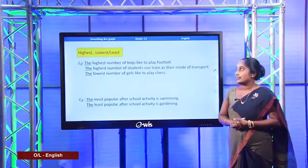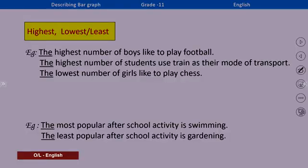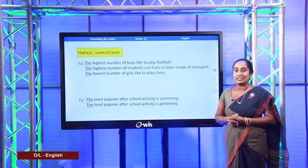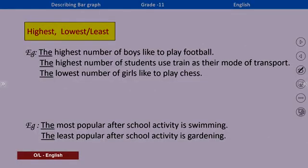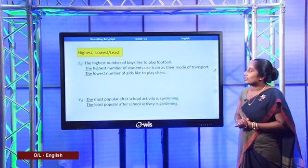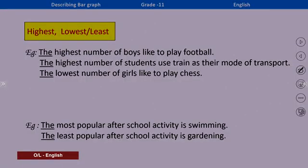Now let's look at more language expressions. When you see words like 'highest' and 'lowest', remember the superlative forms of adjectives — that's why we use the definite article 'the' in front of them. For example: 'The highest number of boys like to play football.' Second example: 'The highest number of students use train as their mode of transport.'